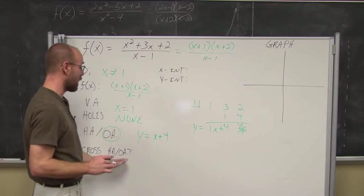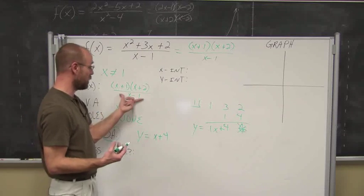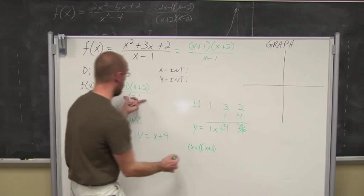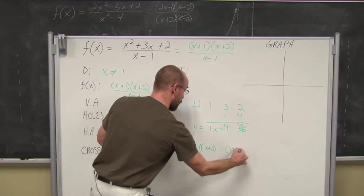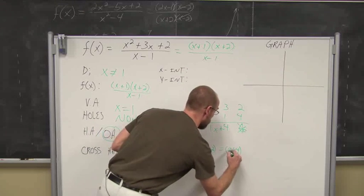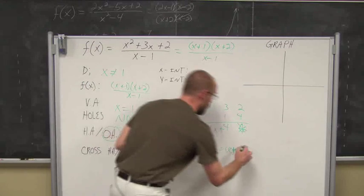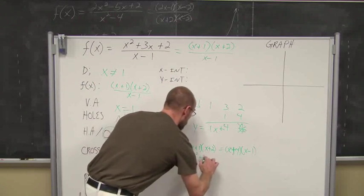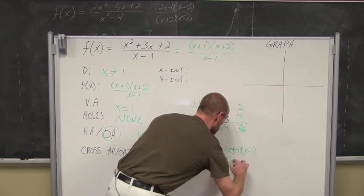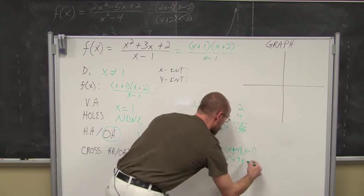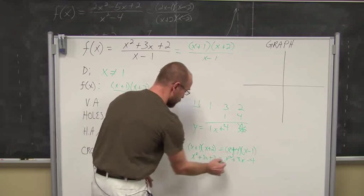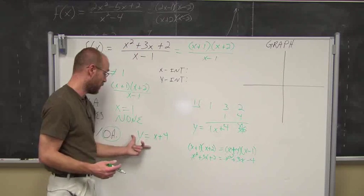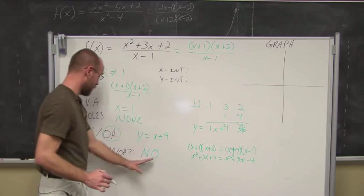Does the graph cross the oblique asymptote? I set the function equal to x + 4 and multiply both sides by (x - 1), giving (x + 1)(x + 2) equals (x + 4)(x - 1). Expanding: x² + 3x + 2 equals x² + 3x - 4. Subtracting x² and 3x from both sides gives 2 equals negative 4 — not a true statement — meaning the graph does not cross the oblique asymptote.